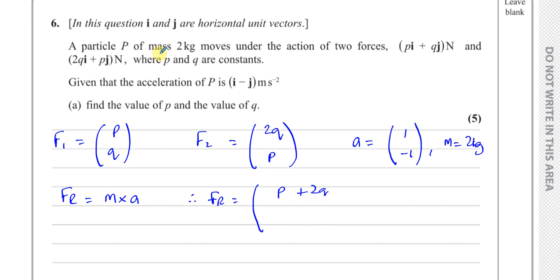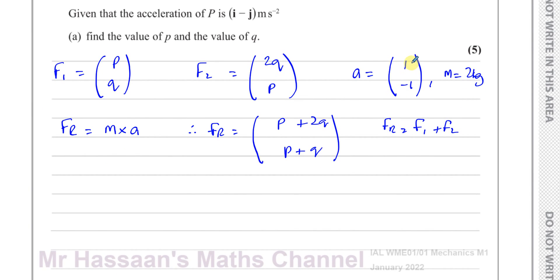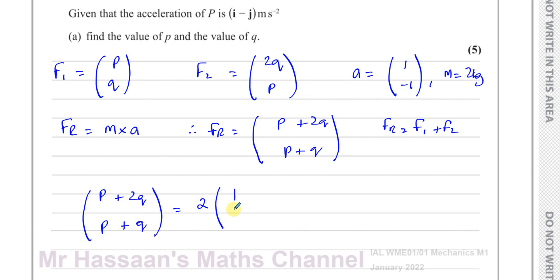So the resultant force has components p + 2q and p + q. That's just the two forces added together. The mass is 2 kilograms and the acceleration is (1, −1), so setting resultant force equal to mass times acceleration: (p + 2q, p + q) = 2 × (1, −1).